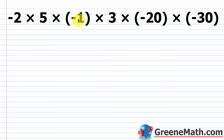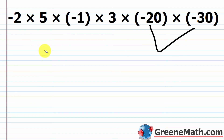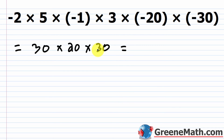Now: negative two times five times negative one times three times negative 20 times negative 30. Count the negative factors: one, two, three, four — that's even, so the product is positive. Multiplying absolute values: two times five is 10, times one is 10, times three is 30, times 20, times 30. Using trailing zeros: three times two times three is 18, with three trailing zeros attached, giving positive 18,000.